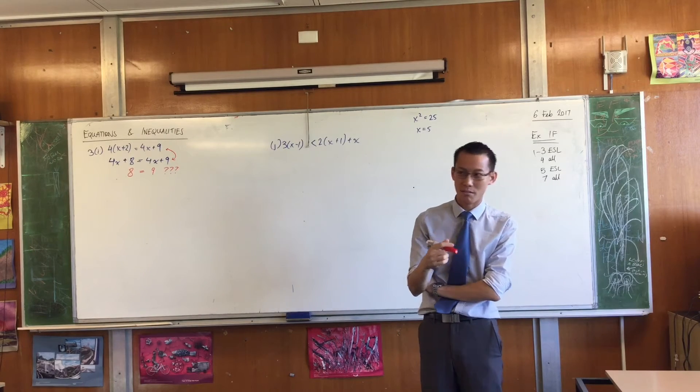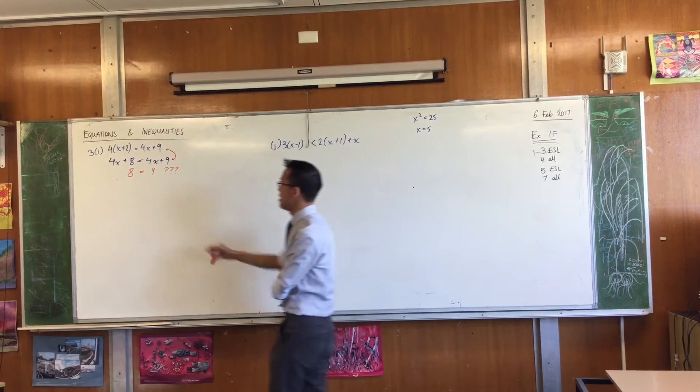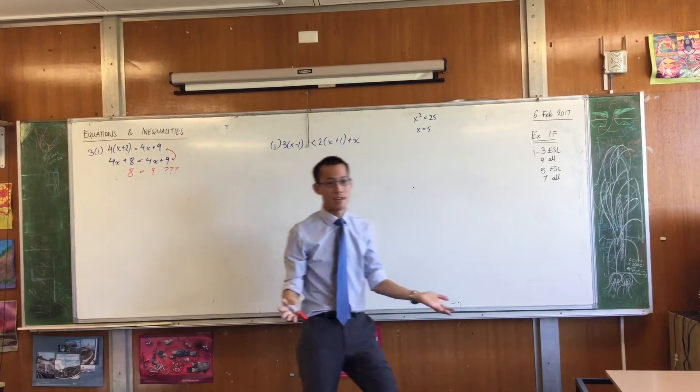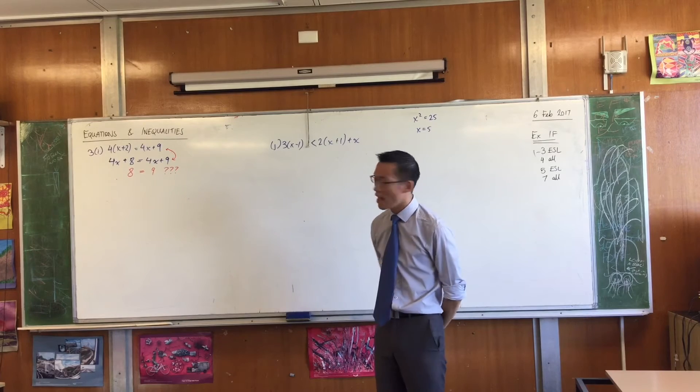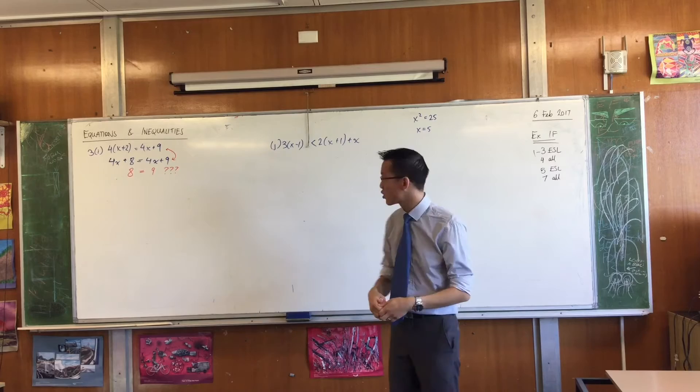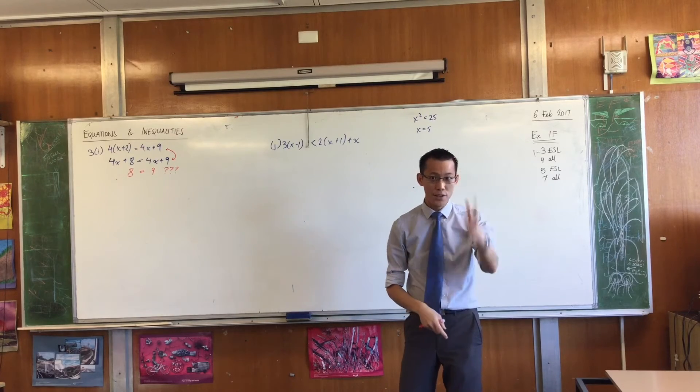Whatever value of x you choose, 1, 3, a million, negative 5, okay? These two objects here, 4x and 4x on both sides, they'll always be the same, whatever they are. And then you're left with these two bits that are different, okay? Now this is very easy to illustrate if you think about this visually.